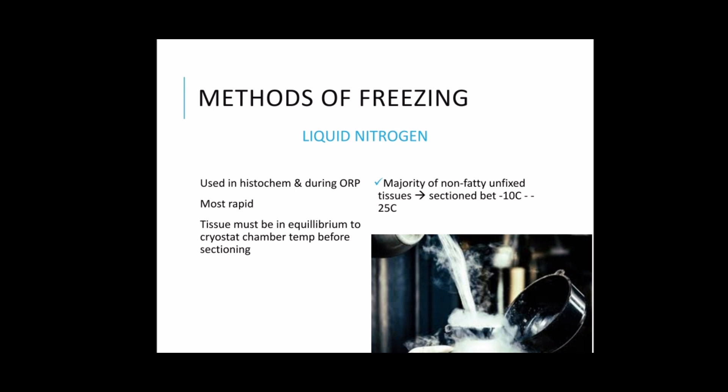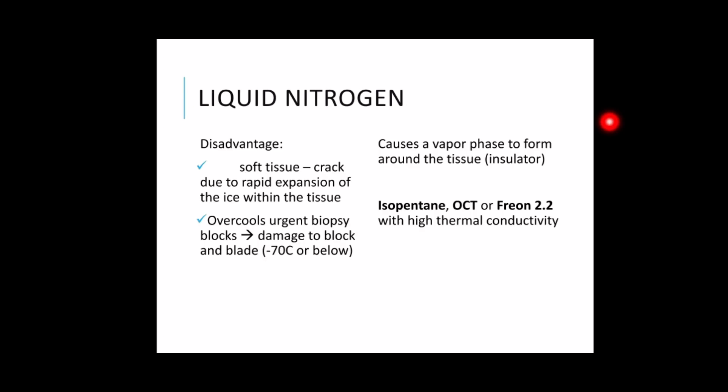Liquid nitrogen also overcools urgent biopsy blocks, causing damage to both block and blade if sectioning is done at negative 70 degrees Celsius or below. Tissue snap frozen in liquid nitrogen must therefore be allowed to equilibrate to cryostat chamber temperature before sectioning is attempted. The majority of non-fatty and fixed tissues are sectioned well at temperatures between negative 10 and negative 25 degrees Celsius. One problem with liquid nitrogen is that it causes a vapor phase to form around the tissue, acting as an insulator that causes uneven cooling, particularly of muscle biopsy, making diagnostic interpretation difficult.